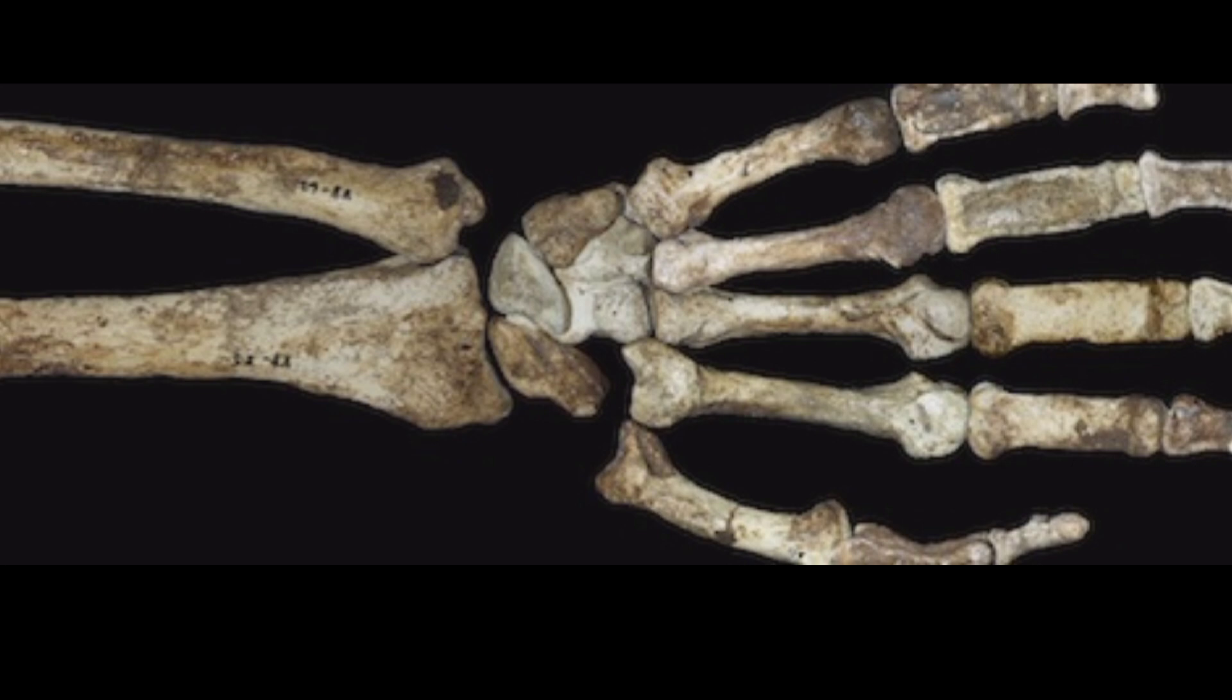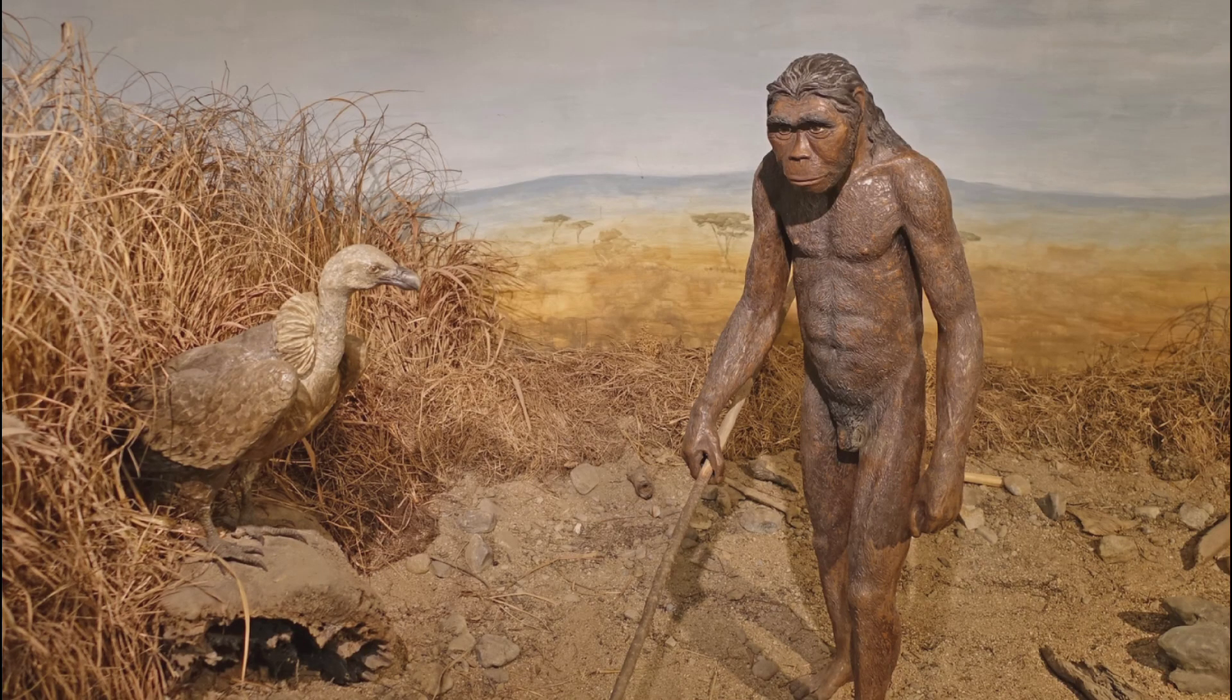By examining their skeletal remains, researchers have discovered an interesting clue: the right arm bones of these primates were more robust than their left arm bones. This suggests a significant preference for right-handedness even in our ancient human relatives.